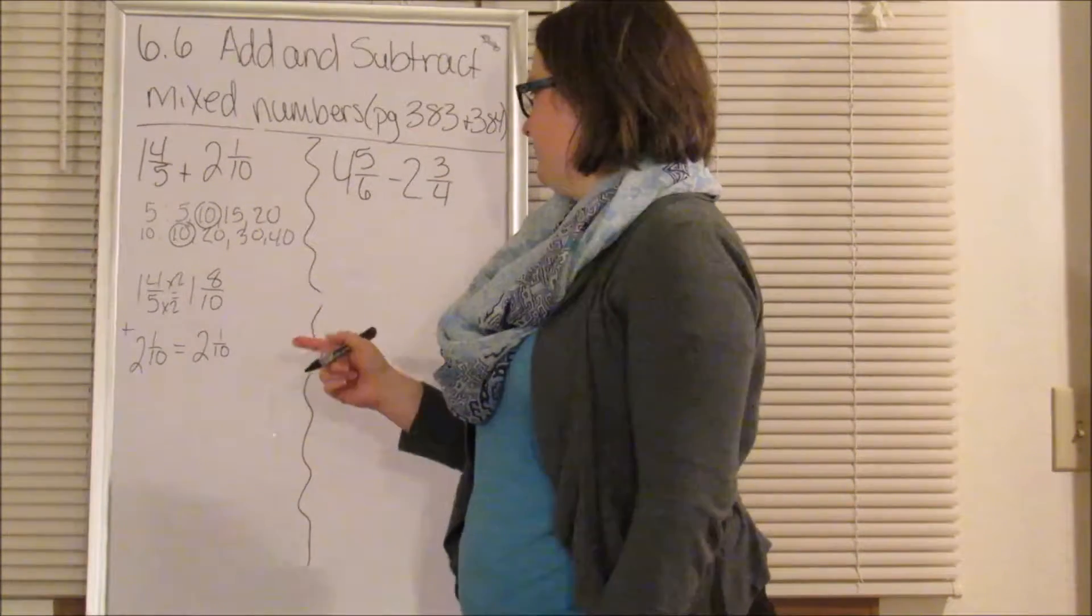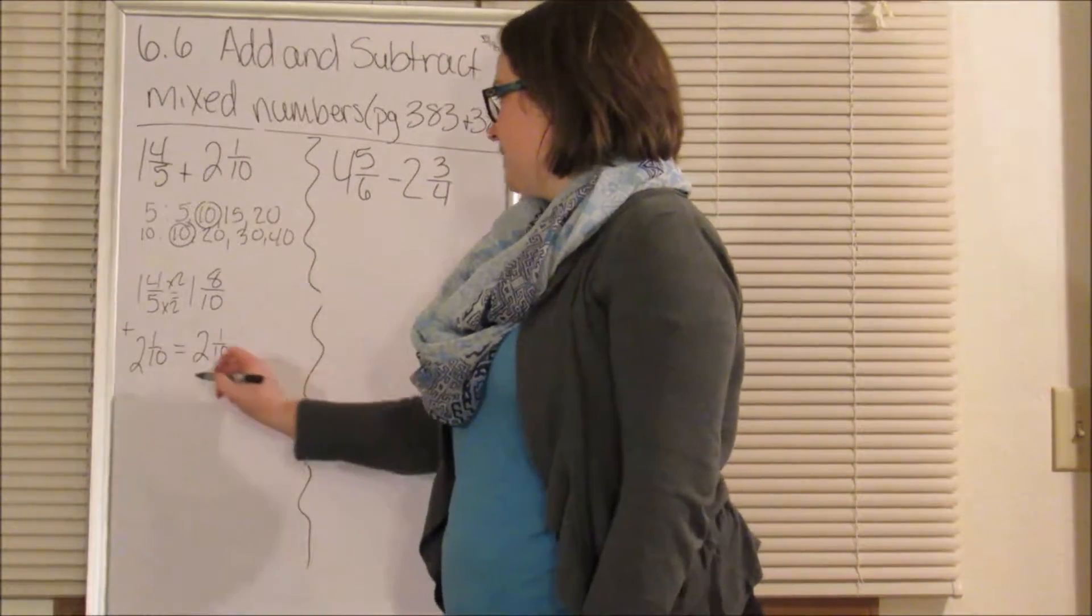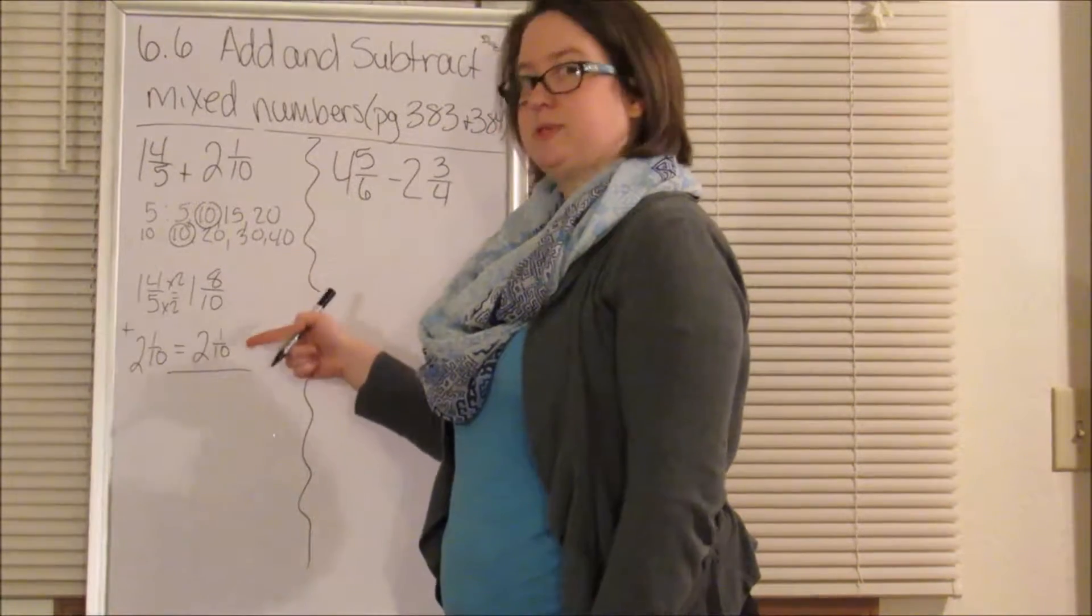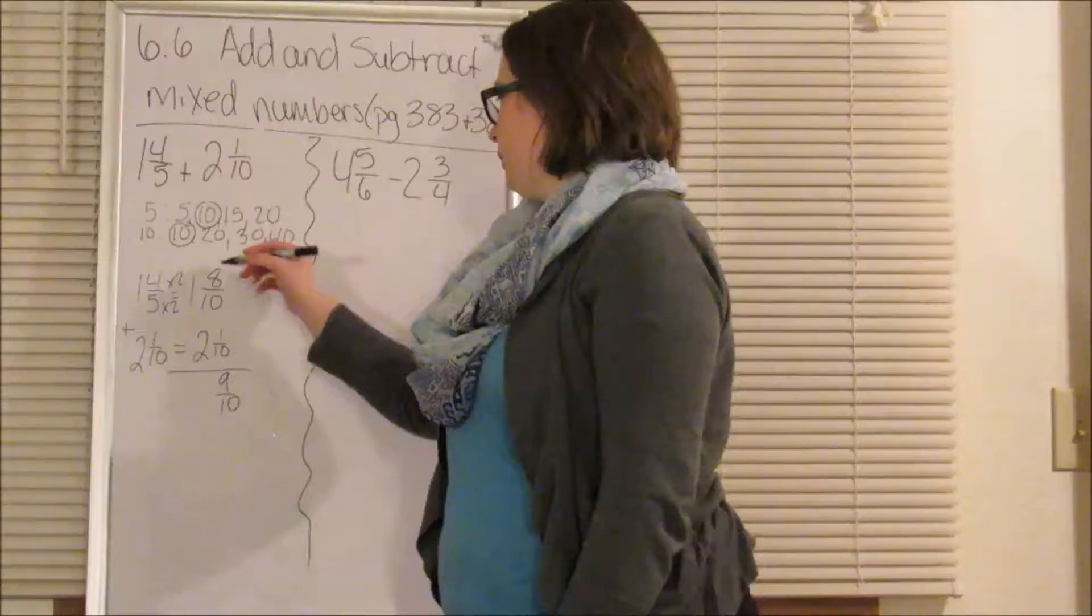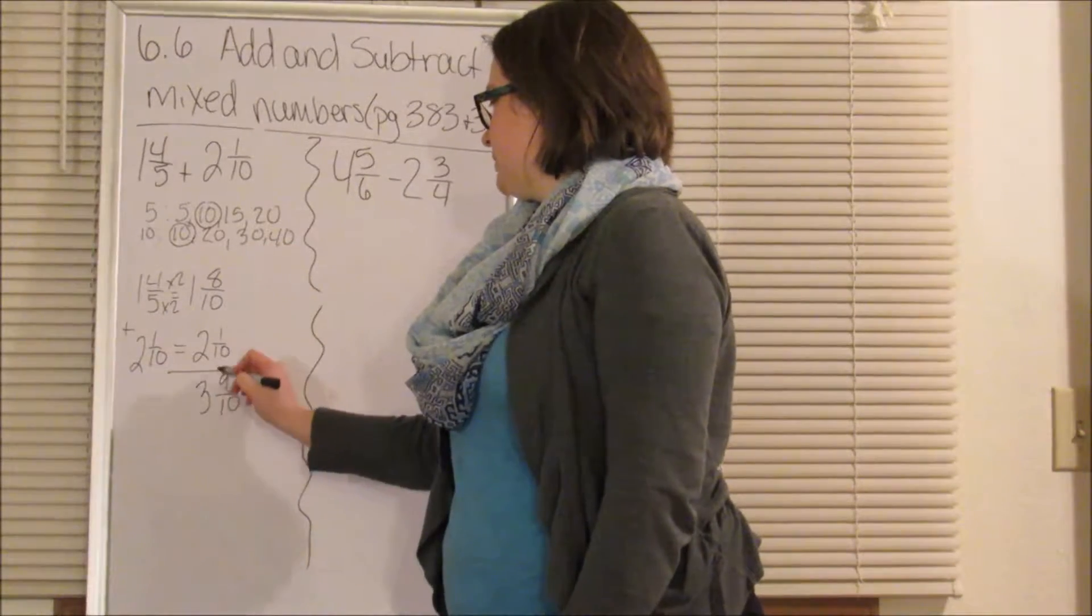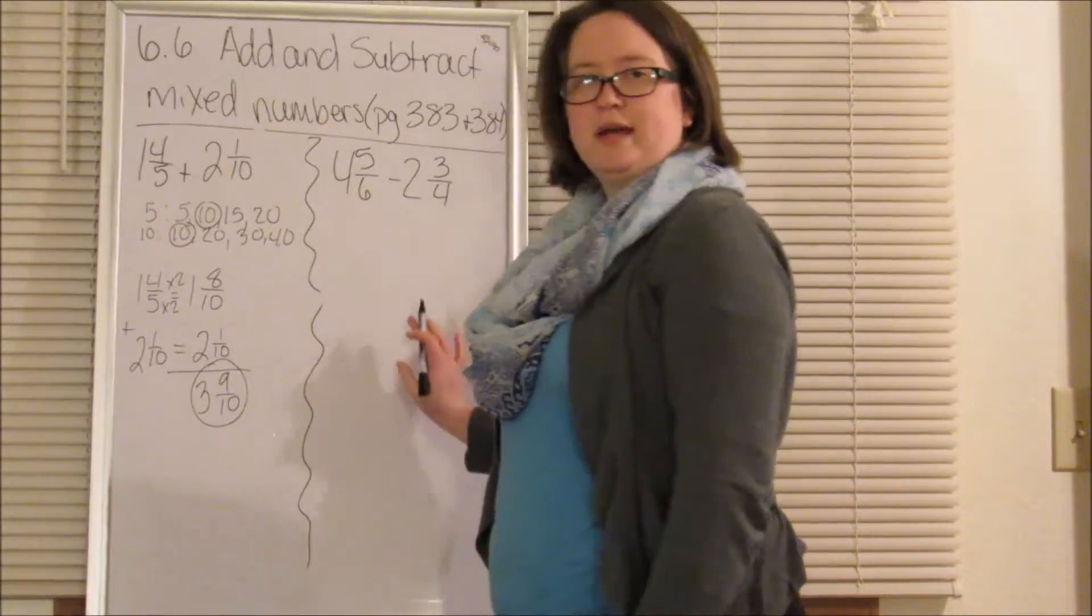Now, we have to add. 8 tenths plus 9 tenths, or 8 tenths plus 1 tenths equals 9 tenths. And 1 plus 2 equals 3. So we get 3 and 9 tenths as our answer.